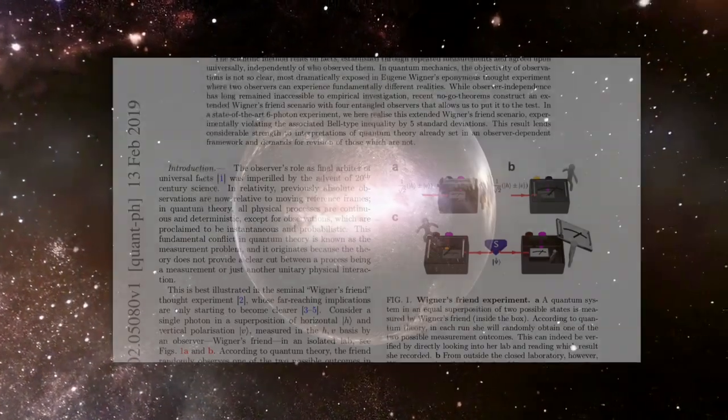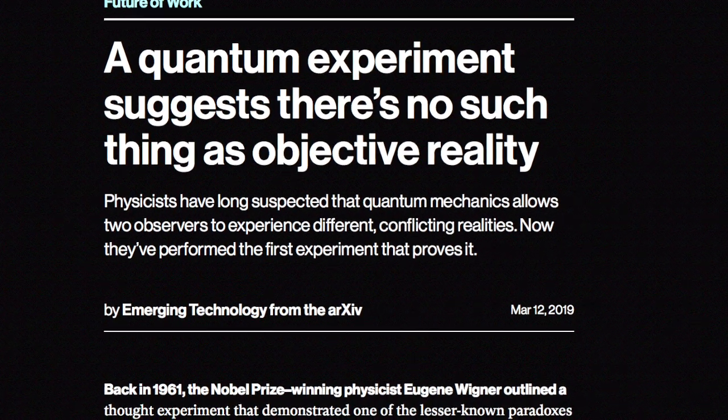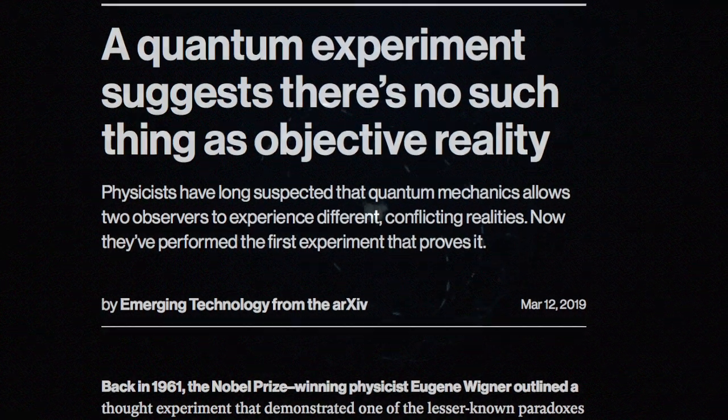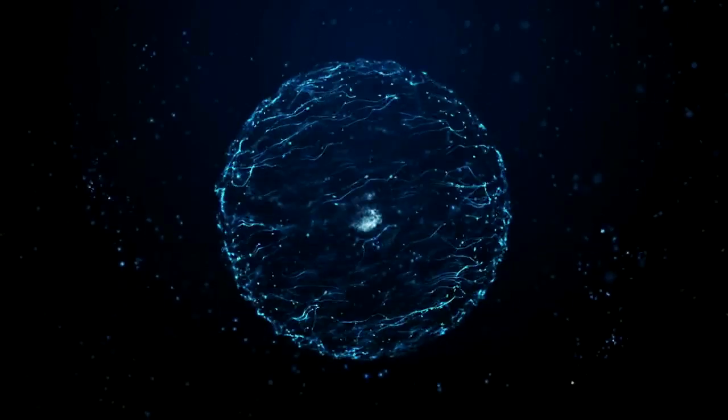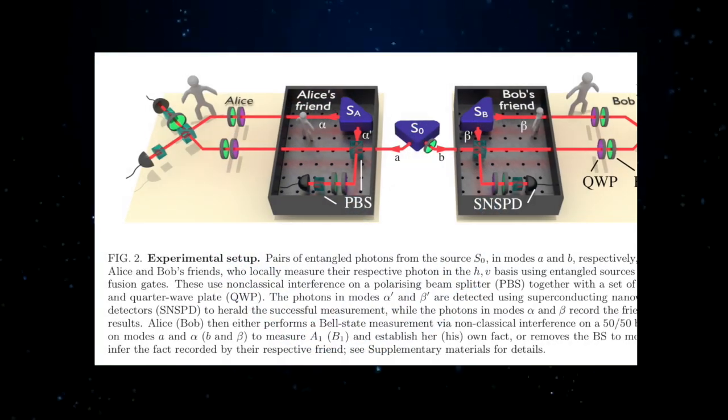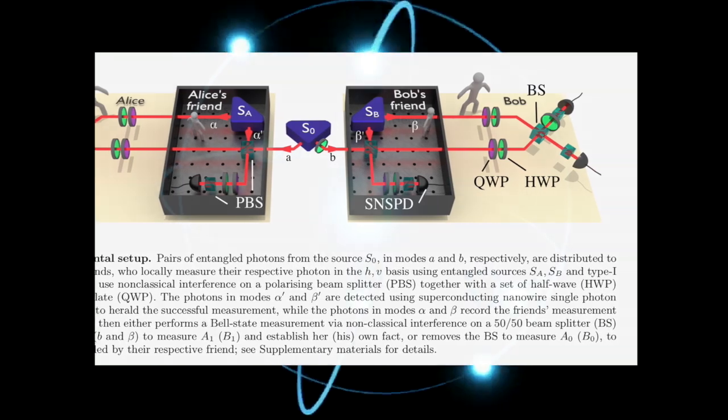The MIT Technology Review wrote, A quantum experiment suggests there's no such thing as objective reality. And they were accurately reporting on what the paper, by physicists at Harriet Watt University, was getting at. But, the scientists' interpretation of what their experiment meant has been called into question by other physicists.